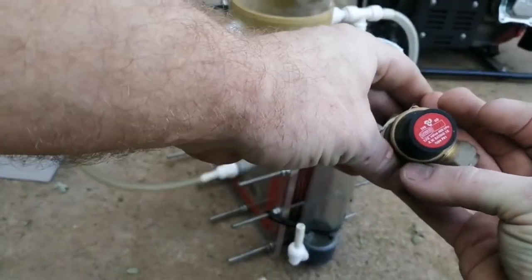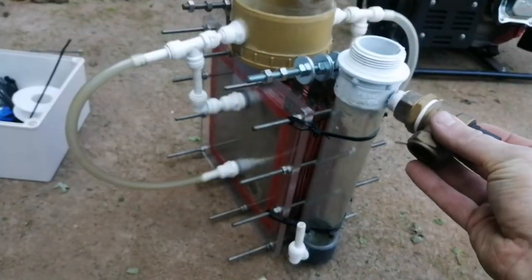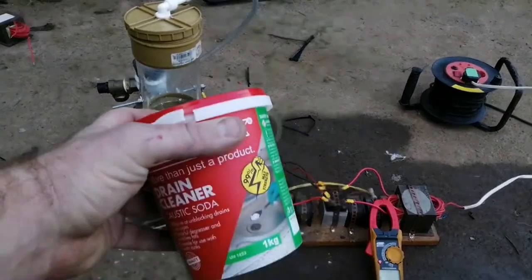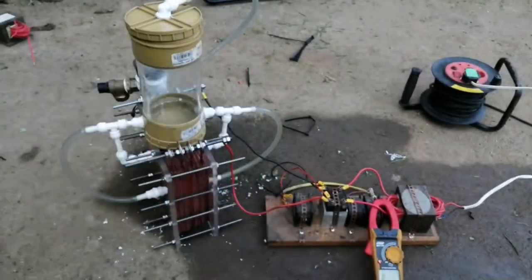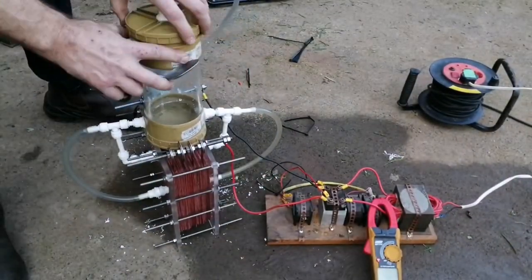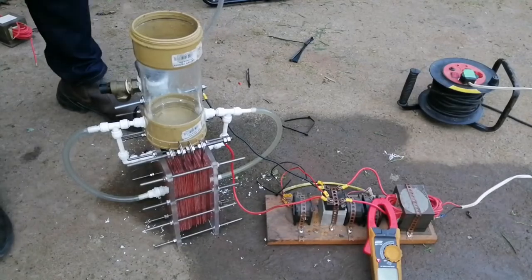I decided to add this pressure relief valve just in case I have any flashback so that my bubbler doesn't explode. Then I added 3 tablespoons of caustic soda to 2 litres of water. This is to help with the conductivity.